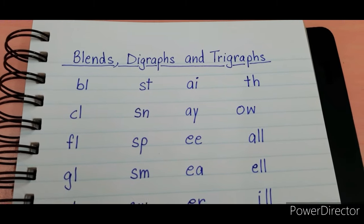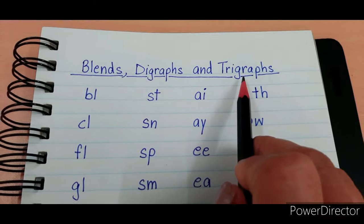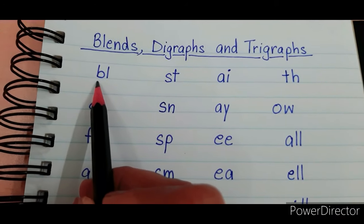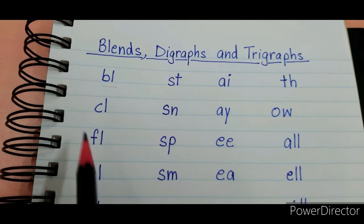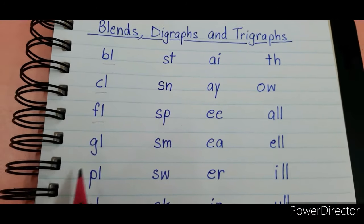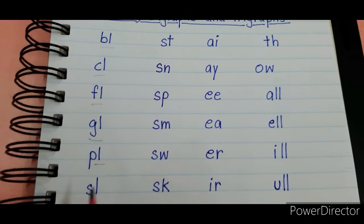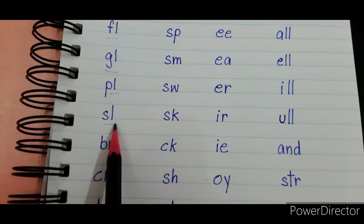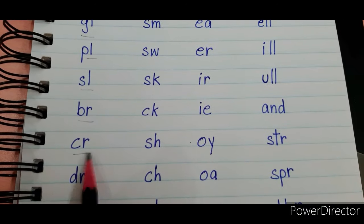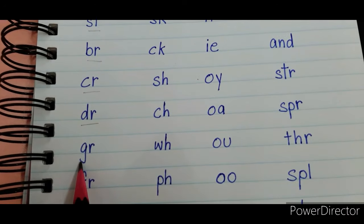Hi my little one, let's learn how to read the blends, digraphs, and trigraphs. Please repeat after me: blow, flow, glow, slow, bro, crow, draw, grow.